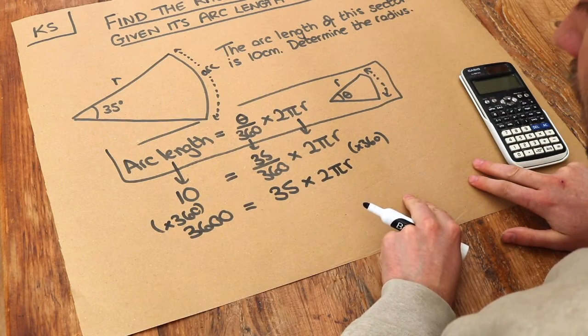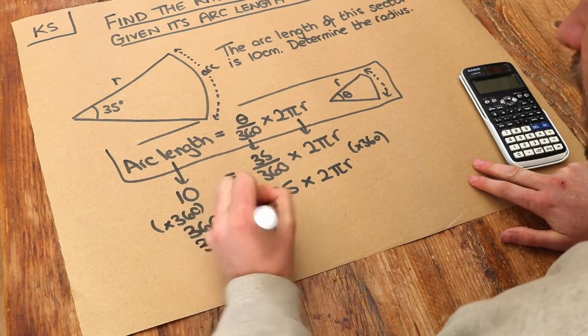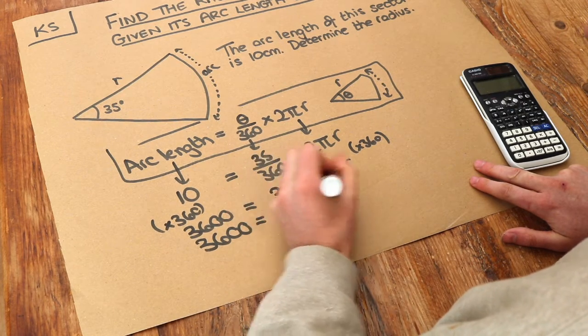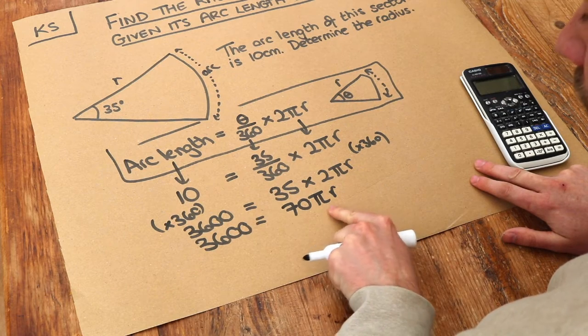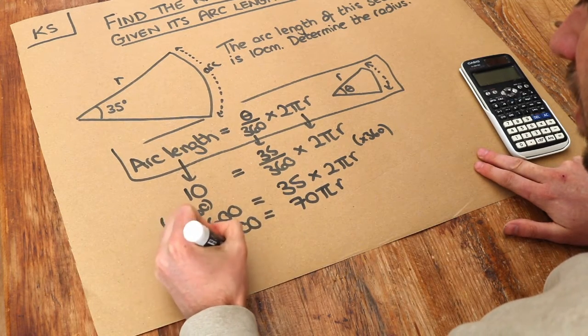I could simplify this further. 35 times 2πr - well, 35 times 2 is 70, and then we've still got the πr. Now r has been multiplied by 70π, so let's divide both sides of the equation by 70π.